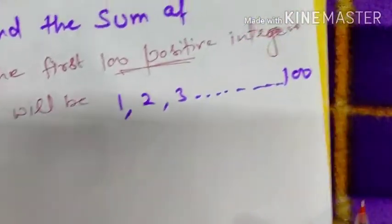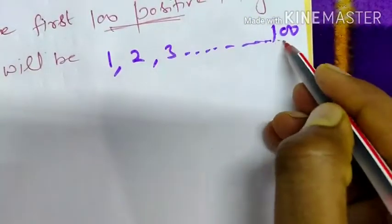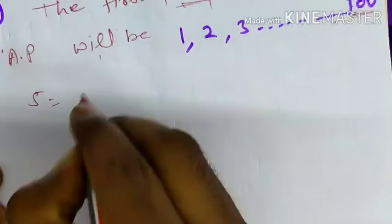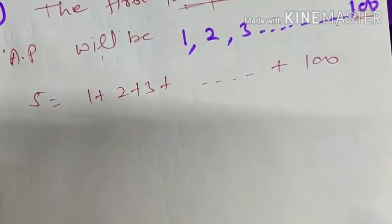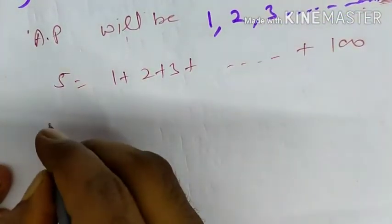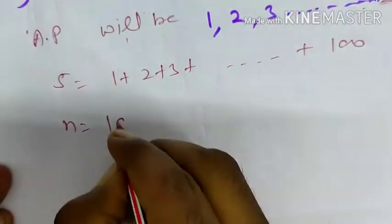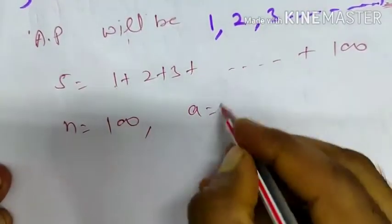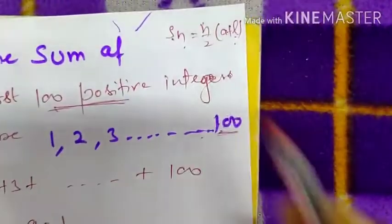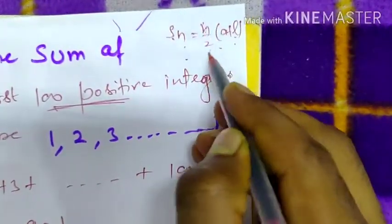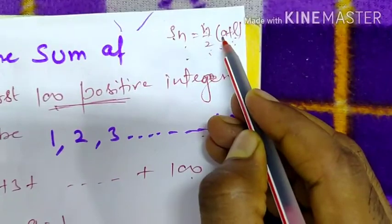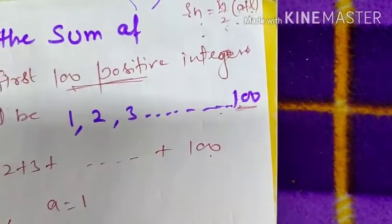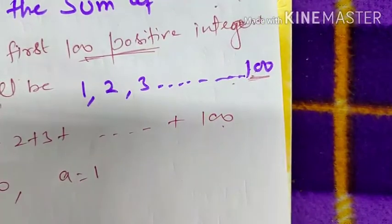When the last term is given, the formula is Sn = n/2(a + l). Here, 100 is the last term of this AP. The sum will be 1 + 2 + 3 up to 100. The number of terms is n, n equals 100, a equals the first term which is 1. We use the formula Sn = n/2(a + l) because the last term is given. We know n and a, so we can easily find the sum of the first 100 positive integers.